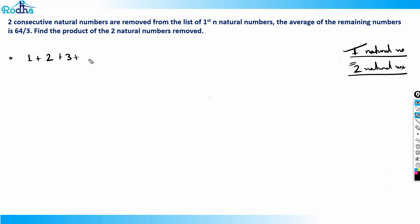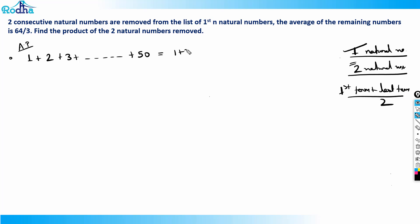Let's start with the example of 1, 2, 3... written till 50. If I write 1 to 50 and remove any two natural numbers, first take the average. It's an AP — an arithmetic progression — with difference 1. In an AP, the average is always (first term + last term) / 2, which equals (1 + 50) / 2 = 25.5.